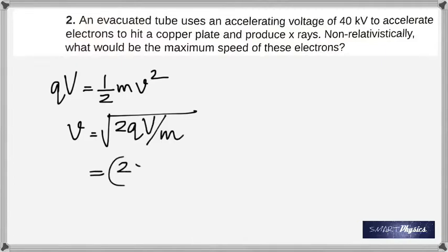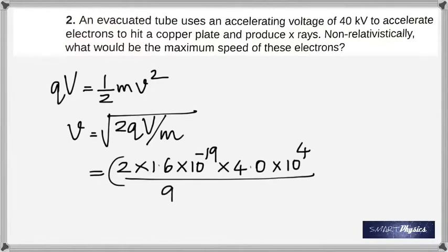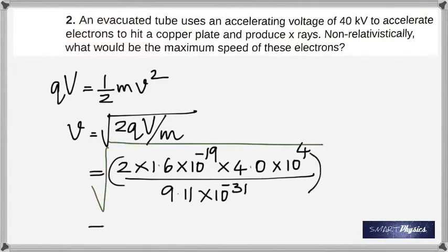That's the formula: square root of 2 times the charge times the voltage divided by mass. The charge of the electron is 1.6 times 10 to the negative 19, and the voltage is 40 kilovolts, which is 4 times 10 to the power 4, divided by the mass of the electron. When you do that and take the square root, you get 1.17 times 10 to the 8 meters per second.